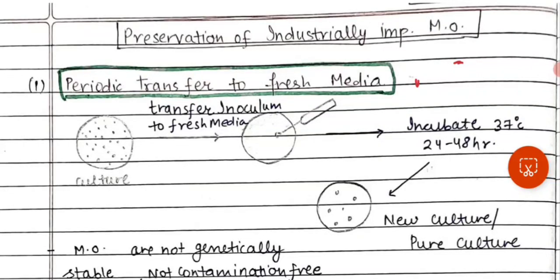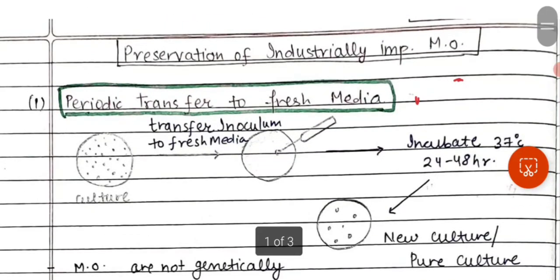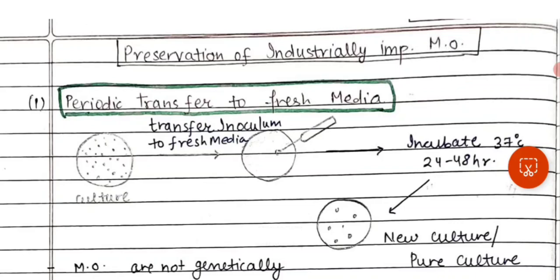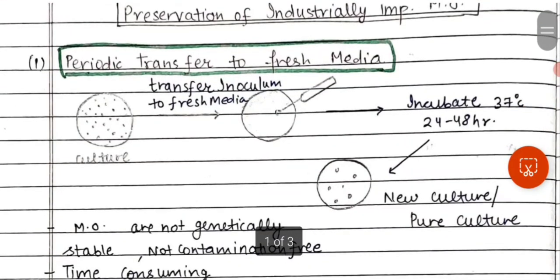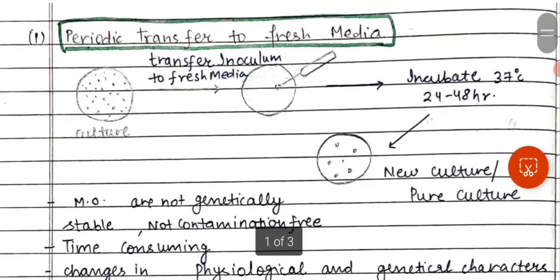We are going to discuss the preservation of industrially important microorganisms. Preservation means we are keeping microorganisms preserved in such a way that there is no contamination, they remain genetically stable, and they remain viable.